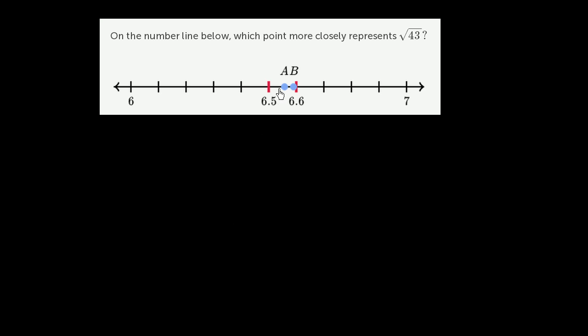So let's go through each of them. Point A right over there, it looks a little bit more than halfway between 6.5 and 6.6. Halfway looks like it's right over there. So that would be 6.55. So I would estimate A to be approximately 6.56.